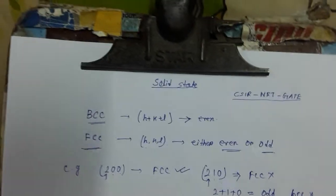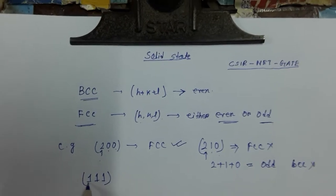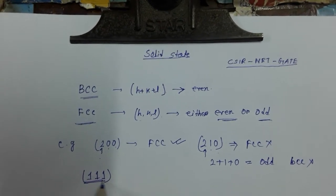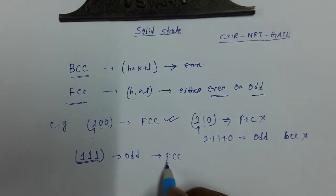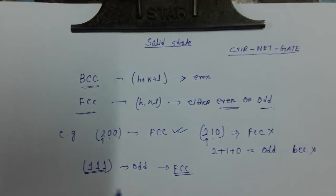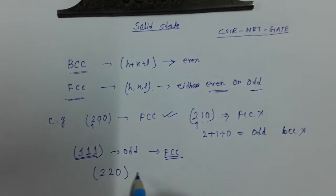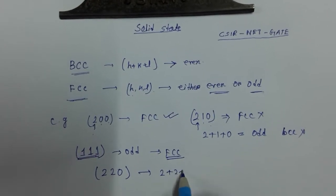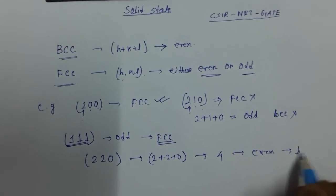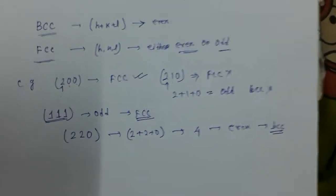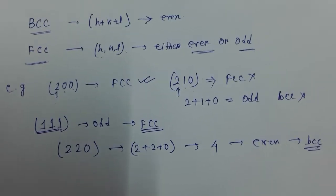If we consider the (1 1 1) plane, all are odd, so it will be FCC structure. But if we consider (2 2 0), then 2 plus 2 plus 0 equals 4, which is even, so this will be BCC structure. From the hkl values, we can determine which structure is BCC or FCC.